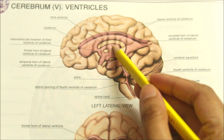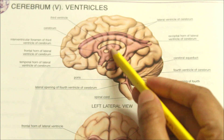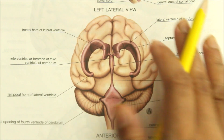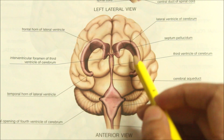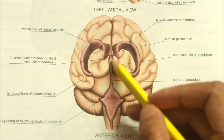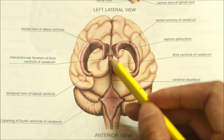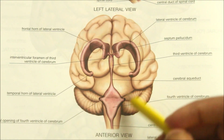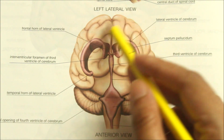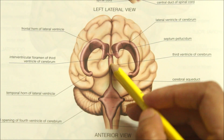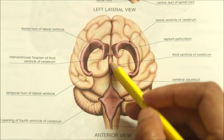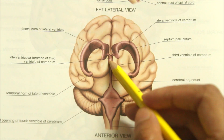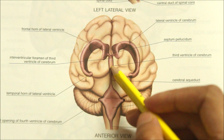We will be learning about the third ventricle shown here. This diagram shows the anterior view of the cerebrum with the four ventricles. The third ventricle is one of the four fluid-filled cavities comprising the ventricular system within the brain. It is a median cleft in the diencephalon between the two thalami and is filled with cerebrospinal fluid.